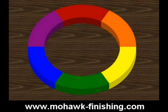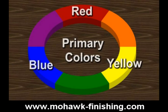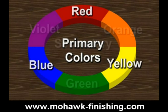First, some terminology. We'll begin with primary colors. The primary colors are red, yellow, and blue. They cannot be obtained by mixing any other colors. All other colors are made from these three, plus black and white.